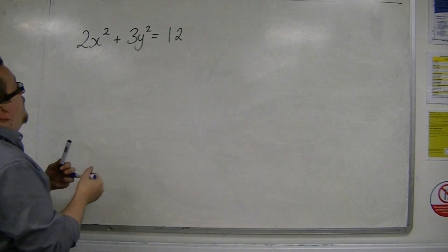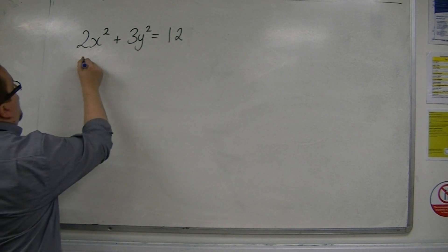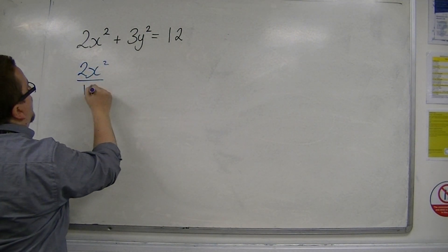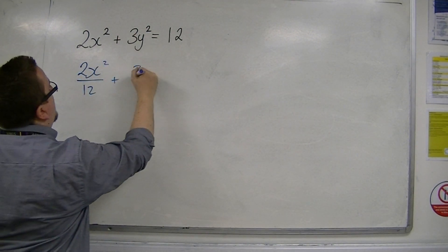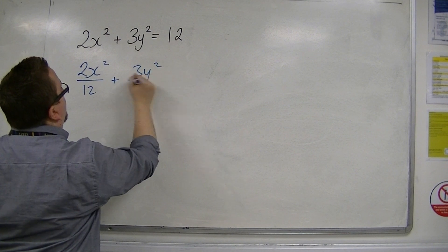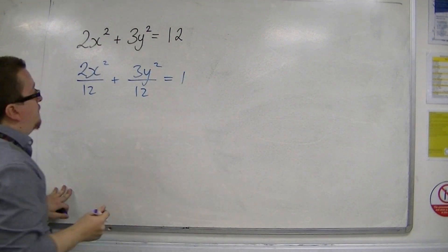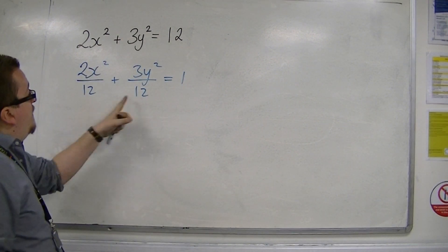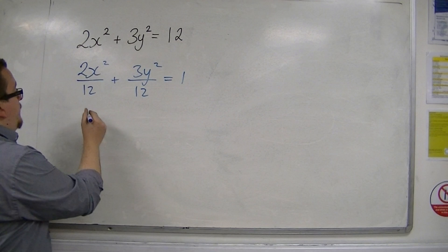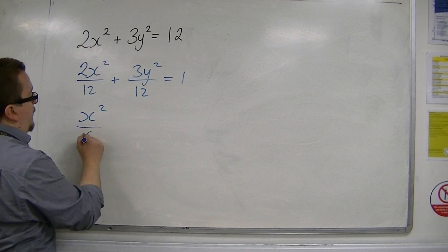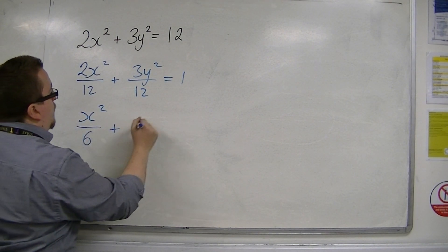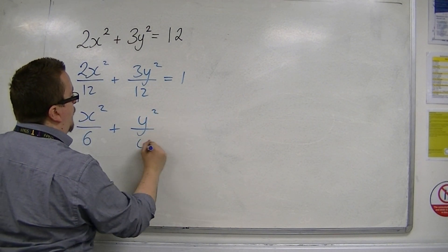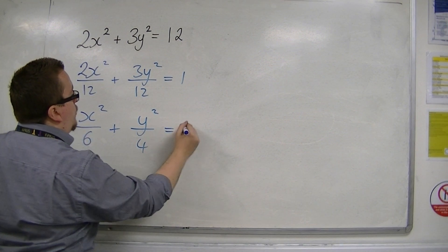Dividing both sides by 12, we're going to get 2x squared over 12 plus 3y squared over 12 is equal to 1. Now if I simplify these two fractions, that means I've got x squared over 6 plus y squared over 4 is equal to 1.